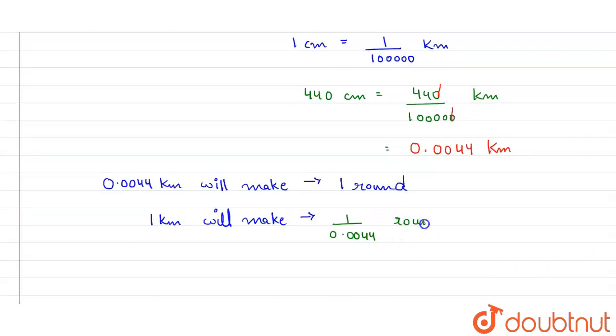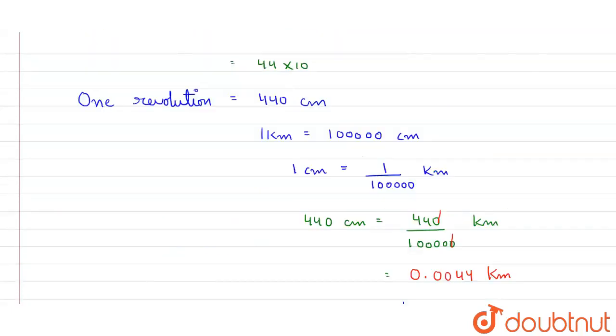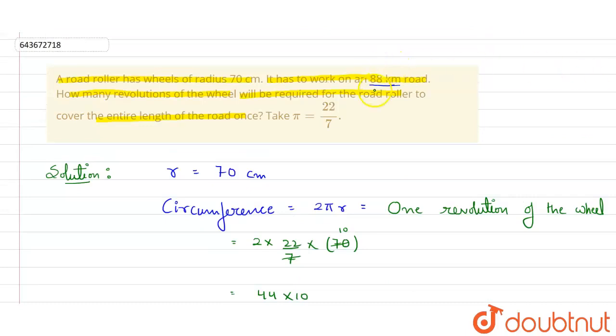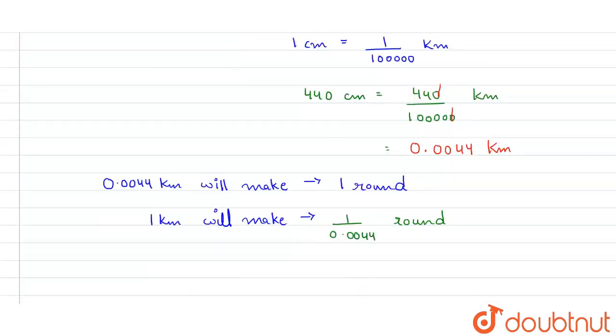So one kilometer will make this many rounds. We have to find for 88 kilometer road. So for covering 88 kilometer, it will take multiply this with 88.